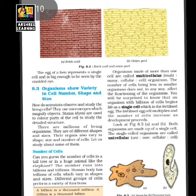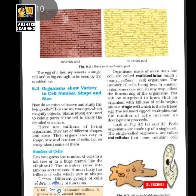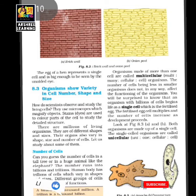Cells are also compared to an egg. The egg of a hen represents a single cell and is big enough to be seen with the naked eye. Most cells are microscopic structures that can only be seen with the help of a microscope. The egg of a hen contains a living structure which later divides and grows into a chicken.